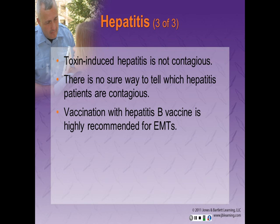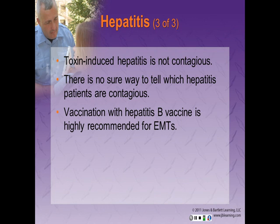Toxin-induced hepatitis is not contagious. There is no sure way to tell which hepatitis patients are contagious. A carrier is a person or animal in whom an infectious organism has taken up permanent residence and may or may not cause active disease. Hepatitis A is transmitted orally through oral-fecal contamination. Hepatitis B is far more contagious than HIV, and the hepatitis B vaccine is highly recommended for EMTs.